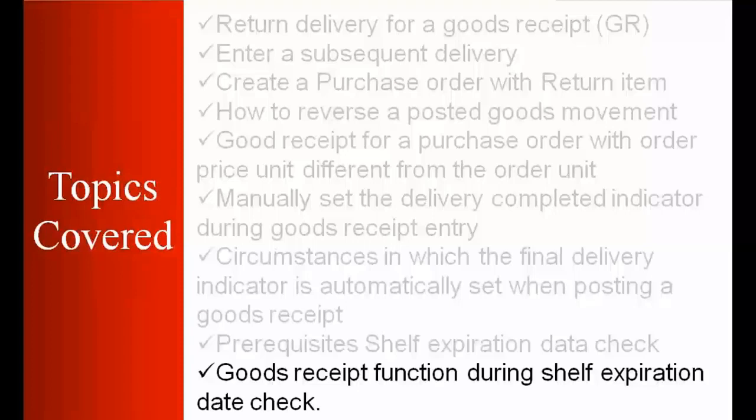We'll also cover circumstances in which the final delivery indicator is automatically set when posting a goods receipt, prerequisites for the shelf-expiration date check, data check, and goods received functions during the shelf-expiration date check. So first of all, we'll be starting with return delivery.